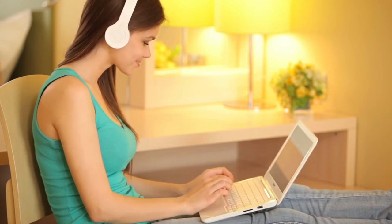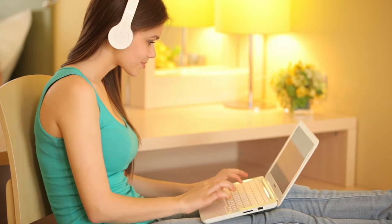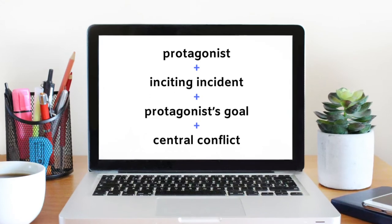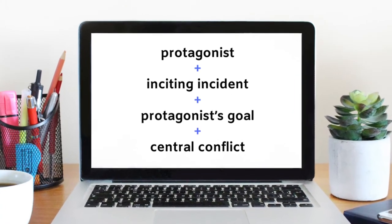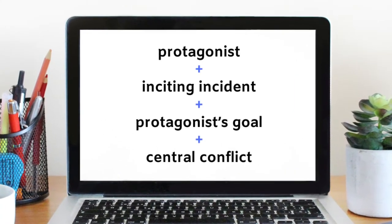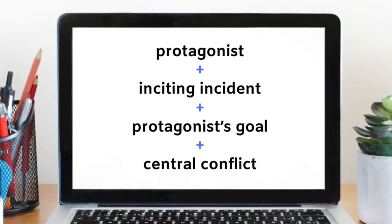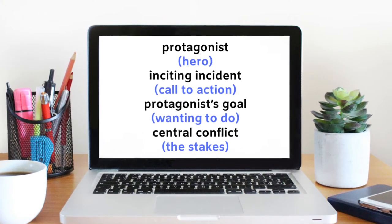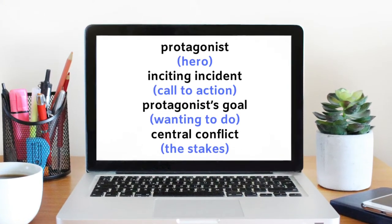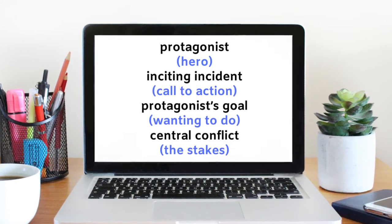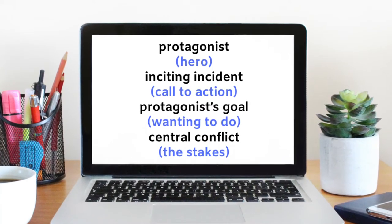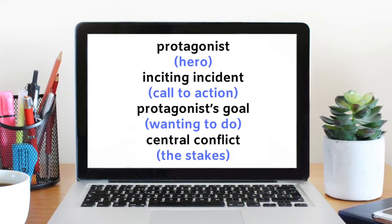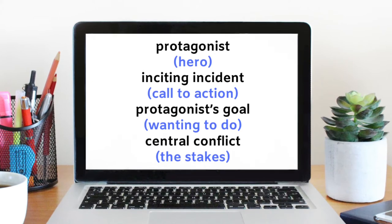There are many ideas as to how a good logline should be written, but the most tried and tested method is to include the following four elements: protagonist, plus inciting incident, plus protagonist goal, plus central conflict. The protagonist is the good guy or hero of your story. The inciting incident is the character's call to action — the catalyst that propels the hero to undertake a journey. The protagonist goal is what the hero hopes to achieve. And the central conflict is the hurdles the hero has to overcome and what the stakes are.